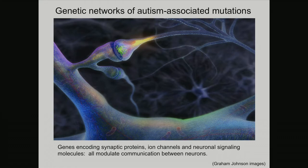Communication between neurons occurs at something called the synapse — a connection between one neuron and another. An electrical impulse comes in, causes little vesicles to be released, they go across the cleft, and the signal continues. It's almost like a telephone. A lot of these genetic abnormalities associated with autism seem to cluster in how this synaptic communication is regulated.